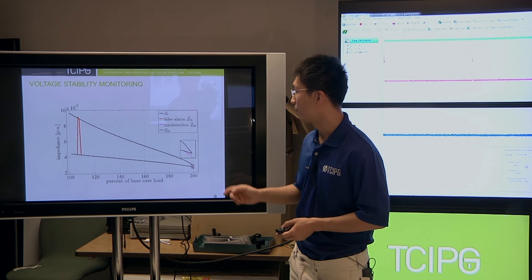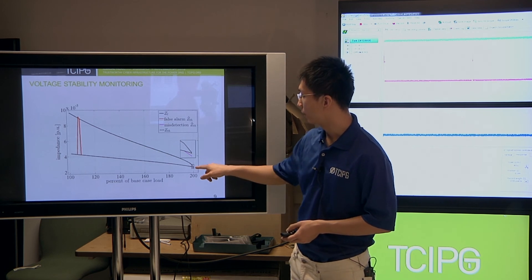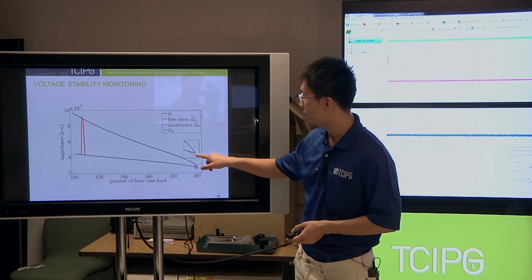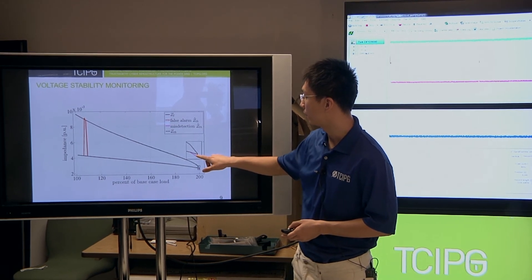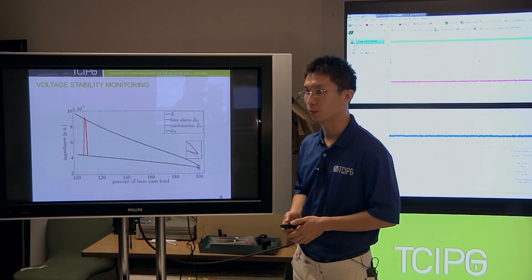By analogy, we could also spoof the system such that when the system is actually unstable, you could make it appear that it's stable and cause a misdetection because the magnitude of Thevenin impedance here is lower than the load impedance when it's actually not.